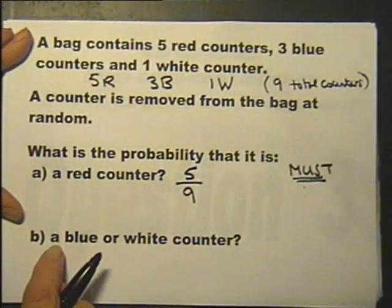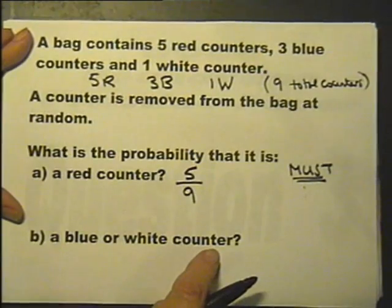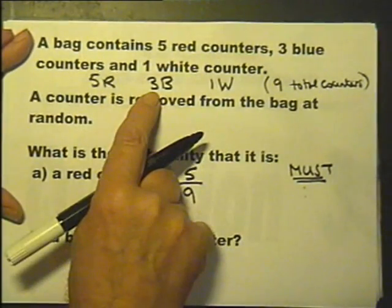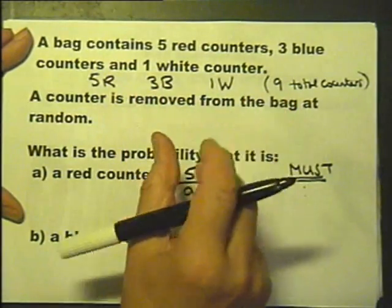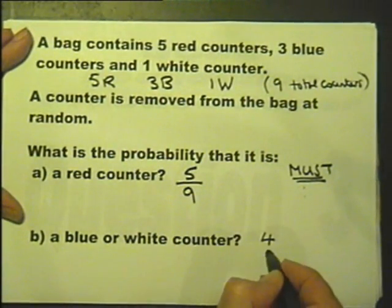What's the probability of a blue or a white counter? So how many blues are there? How many whites are there? 3 plus 1, 4 all together. Four counters are blue or white.